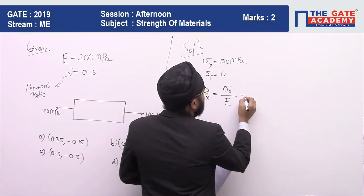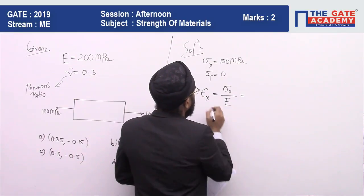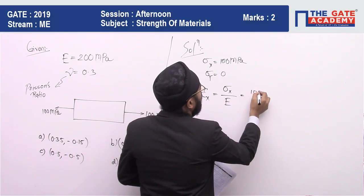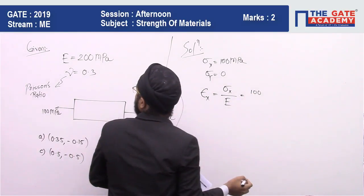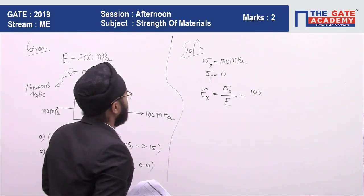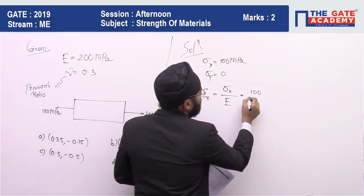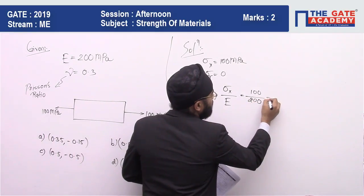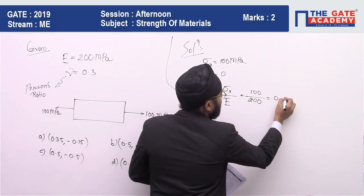So epsilon x equals sigma x divided by E, which is 100 megapascal divided by 200 megapascal, which equals 0.5.